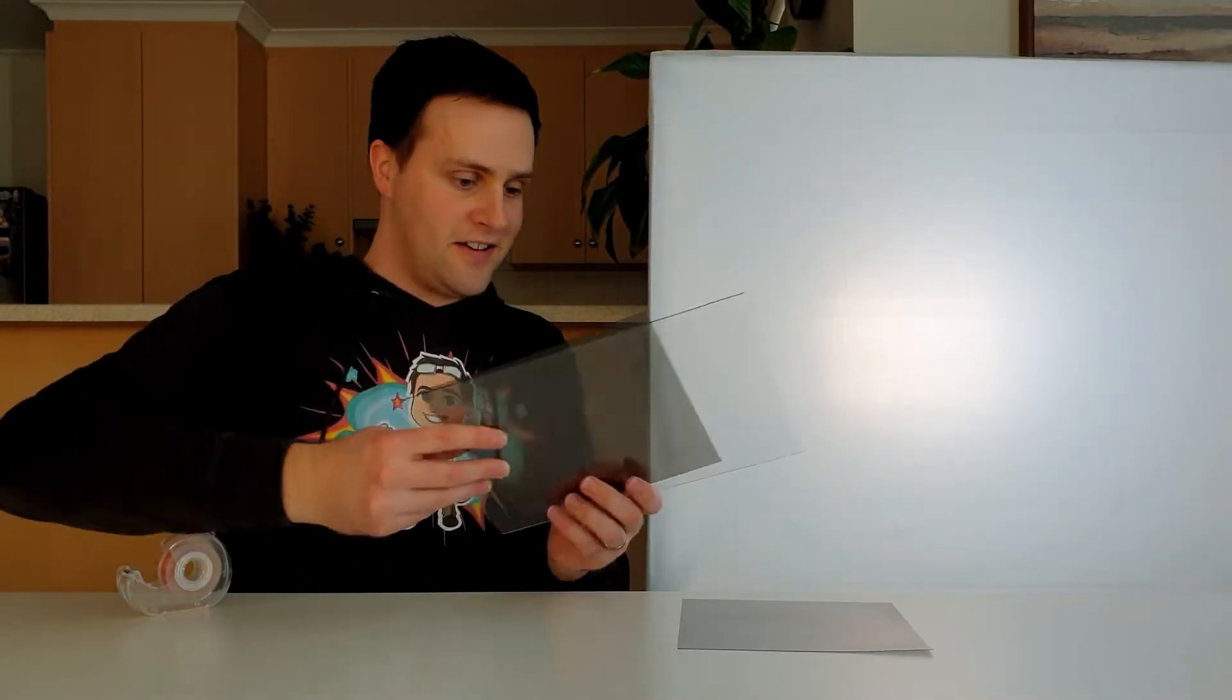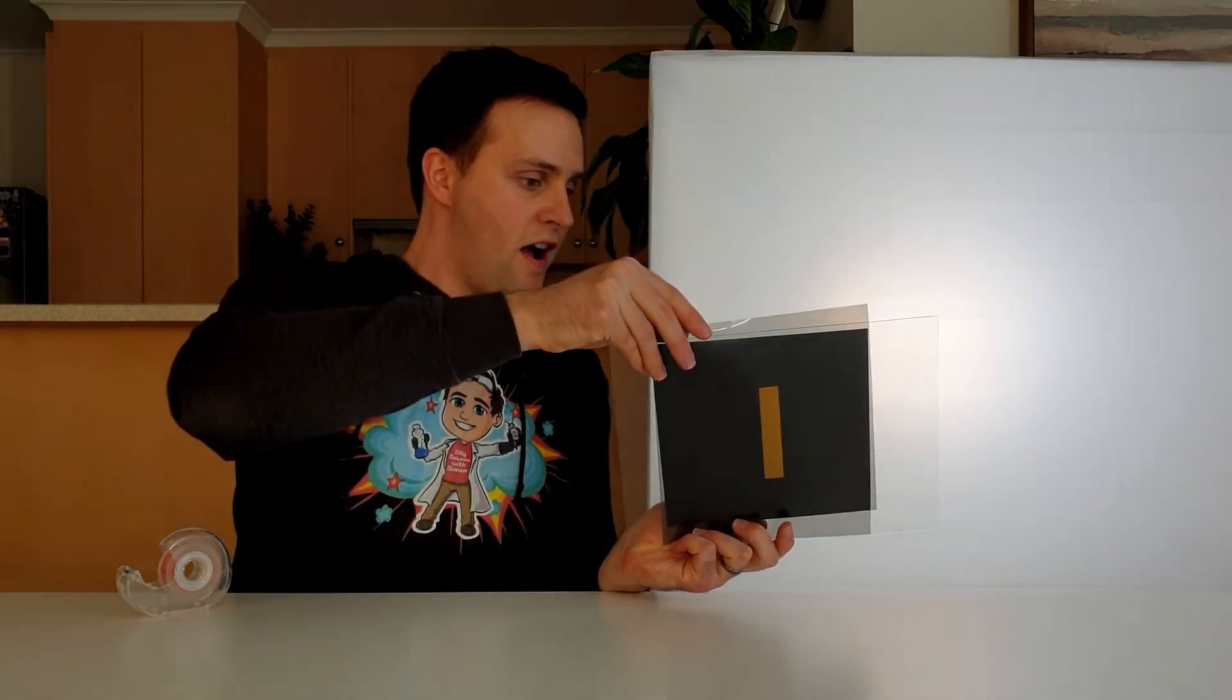Secondly, if we add a piece of tape to the glass and place it between the polarizers, it allows light to pass through.